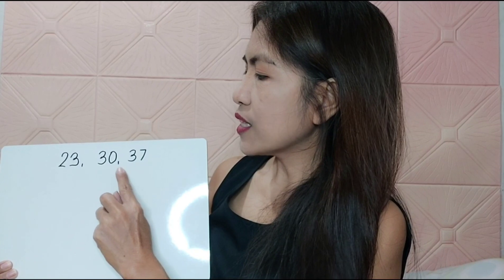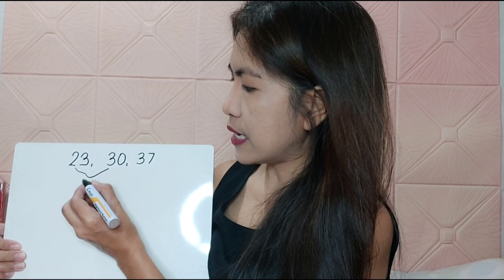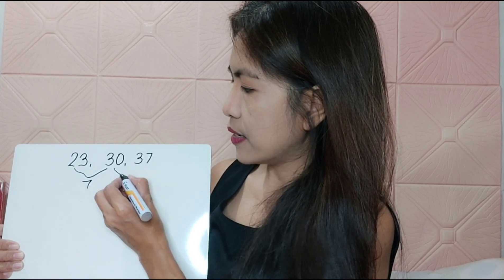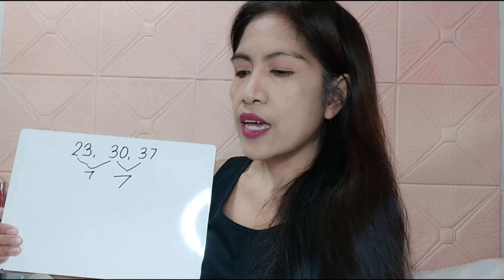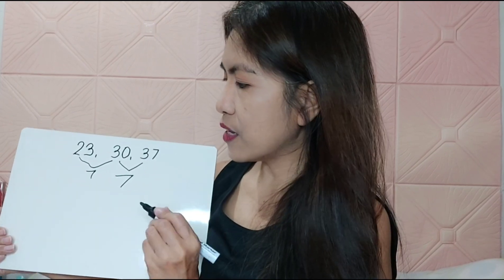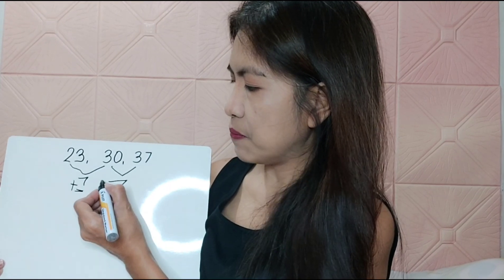So suppose we have here 23, 30, and 37. Let's get first the interval, or the number interval. So the number interval here is 7, and here is also 7. So since this is 7, it's plus 7 and plus 7.